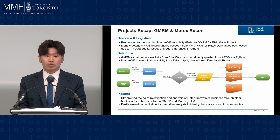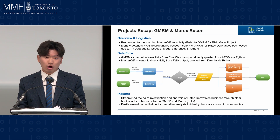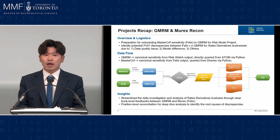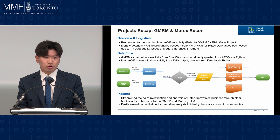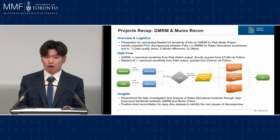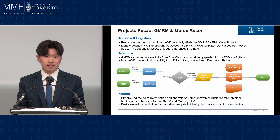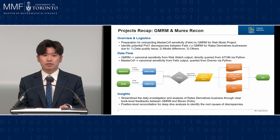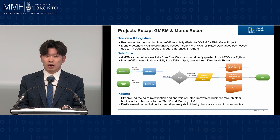Normally, there will be two main causes for discrepancies. The first is a data quality issue on either GMRM's side or Murex's side. The other potential cause is a model difference between GMRM and Murex. If that is the case, we can move the issue forward to the GRA team to look further into the model and see if we can improve the model performance.